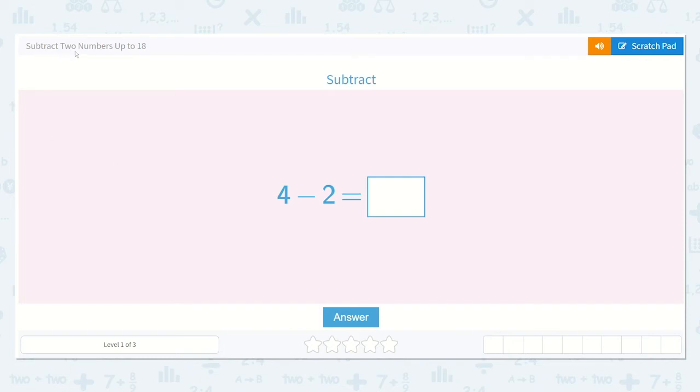Let's begin the lesson. Subtract two numbers up to 18. So they would like us to subtract. They gave us the equation 4 minus 2 is equal to a number.